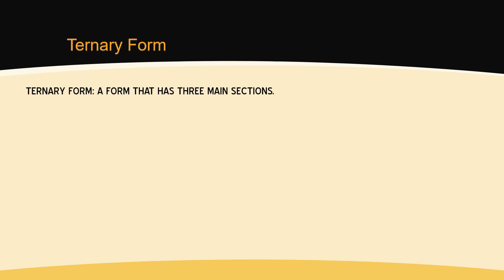Ternary form is a form that has three main sections: an opening section that presents melodic and harmonic material, a middle section that is contrasting, and a restatement of the opening section. This gives ternary form a basic formal diagram of A, B, A.